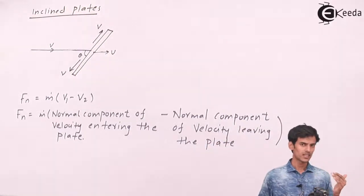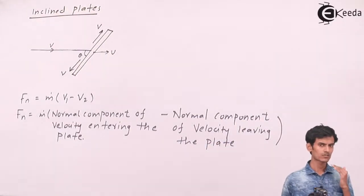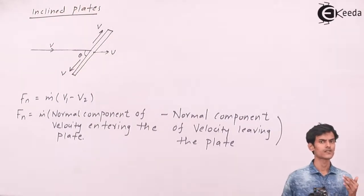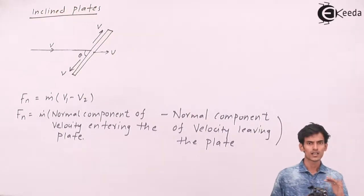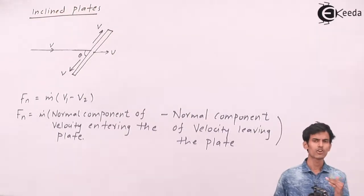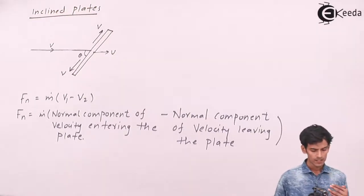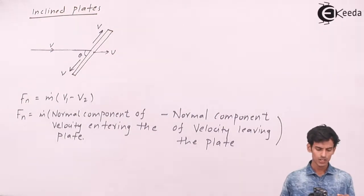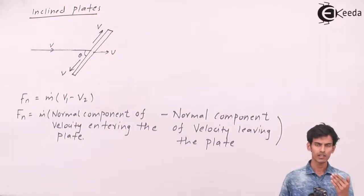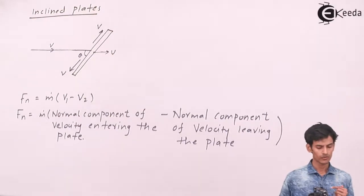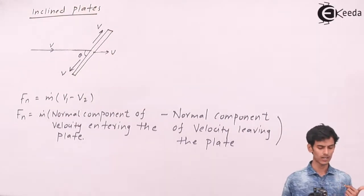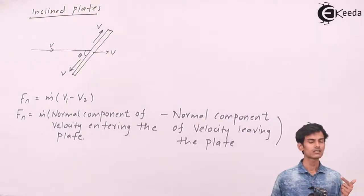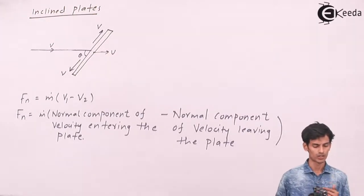The velocity entering the plate is not the normal component directly — it makes some angle — so we need to calculate the normal component of velocity entering. And since the leaving velocity is along the plate, as seen in the diagram, there will be no normal component, so V2 is automatically 0. We then find the normal component of the entering velocity.